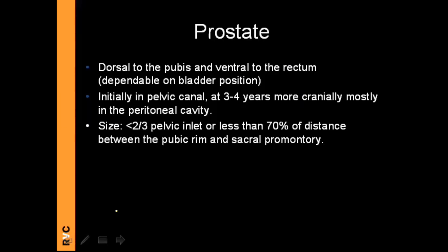The prostate is dorsal to the pubis, ventral to the rectum, and its position depends on the bladder. Initially it is within the pelvic canal, but from around 3–4 years of age it moves more cranially into the peritoneal cavity. A useful rule of thumb is that the prostate size should be less than two-thirds of the pelvic inlet, or less than 70% of the distance between the pubic brim and the sacral promontory. If it is more than that, it is enlarged.